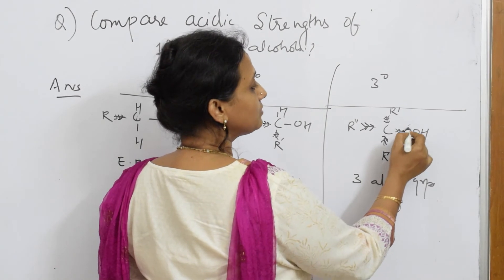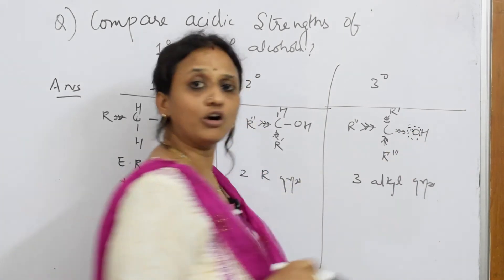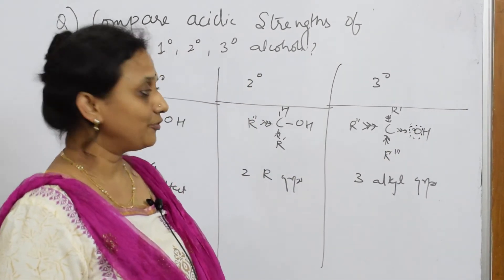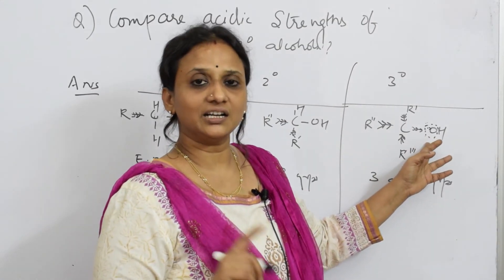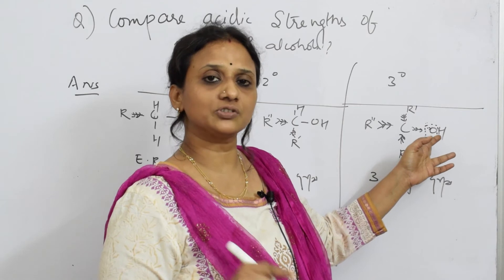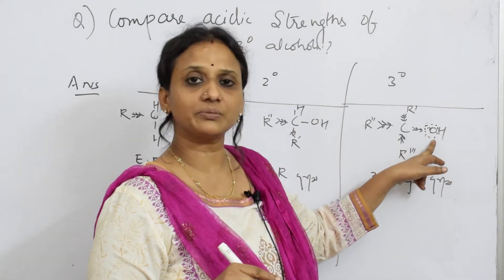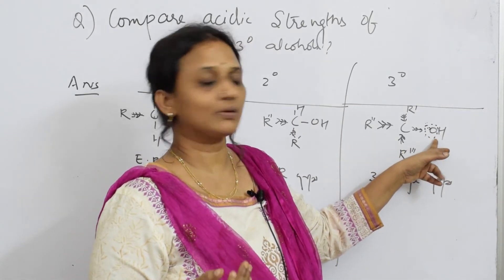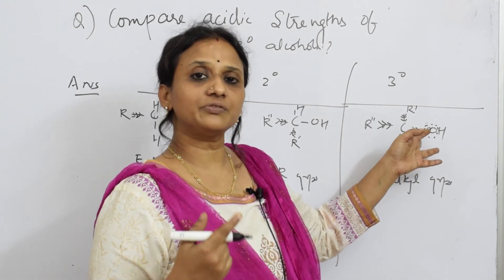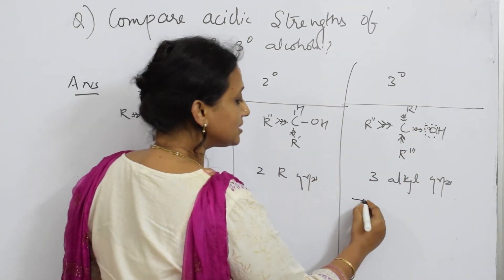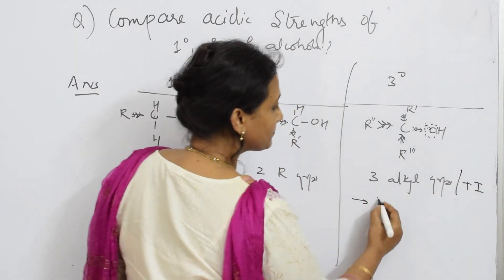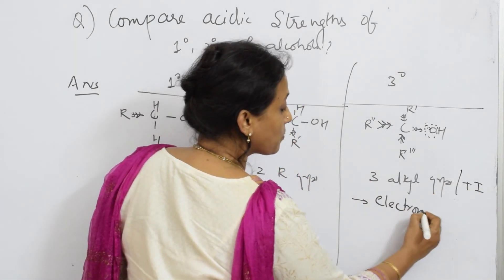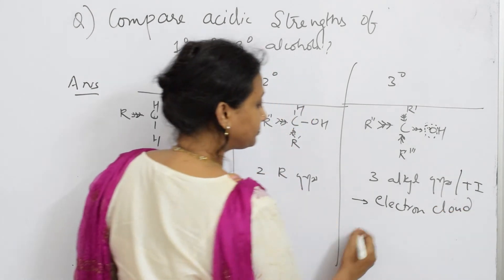This oxygen has a certain amount of electron cloud formed around hydrogen, oxygen. When lot of electrons are accumulated around oxygen, is there any requirement for oxygen to drag this electron from hydrogen? Not possible, not required. Because already there are a lot of electrons or electron cloud which is accumulated. So, what happens here? Due to three alkyl groups and +I effect, electron cloud density increases.